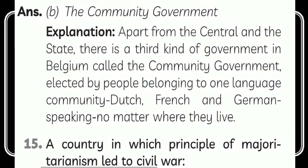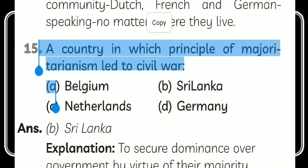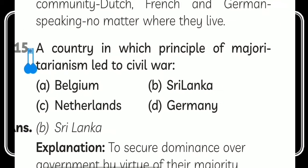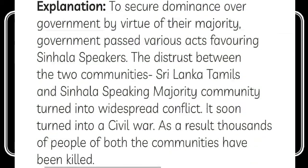Which government in Belgium has power regarding cultural, education, and language-related issues? The answer is the community government. Apart from the central and state governments, there is a third kind of government in Belgium called the community government, elected by the people who belong to one language — Dutch, French, or German. A country in which majoritarianism led to civil war is Sri Lanka. The distrust between Sri Lankan Tamils and the Sinhala-speaking majority turned into widespread conflict, resulting in a civil war.